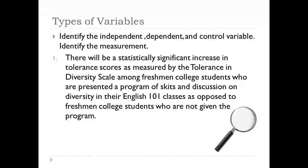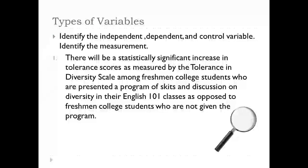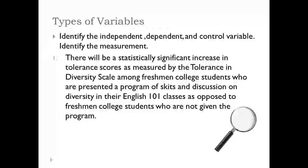Here's our first example, stated in terms of a research hypothesis: There will be a statistically significant increase in tolerance scores as measured by the tolerance and diversity scale among freshman college students who are presented a program of skits and discussion on diversity in their English 101 classes, as opposed to freshman college students who are not given the program. Since we're looking at the difference between two groups, we have a group comparison study, so we're going to have independent and dependent variables.